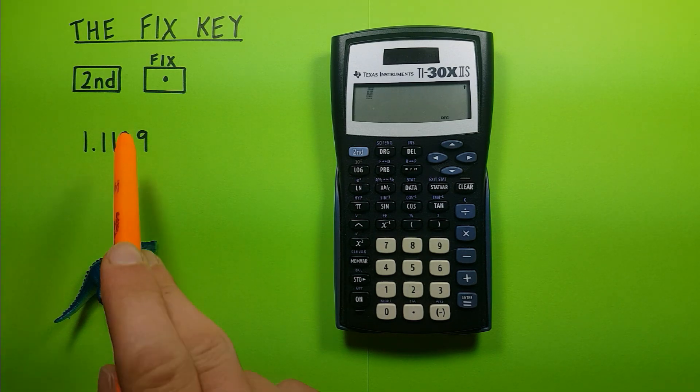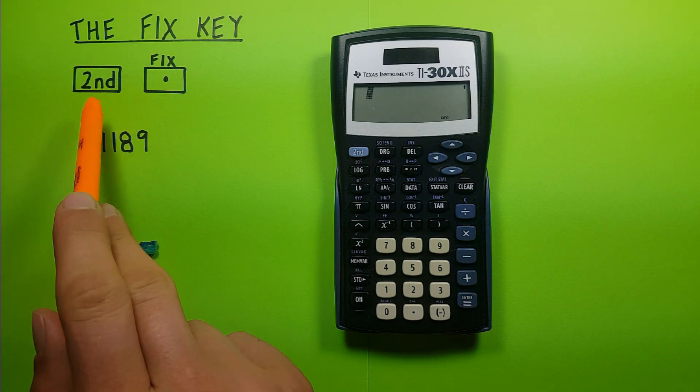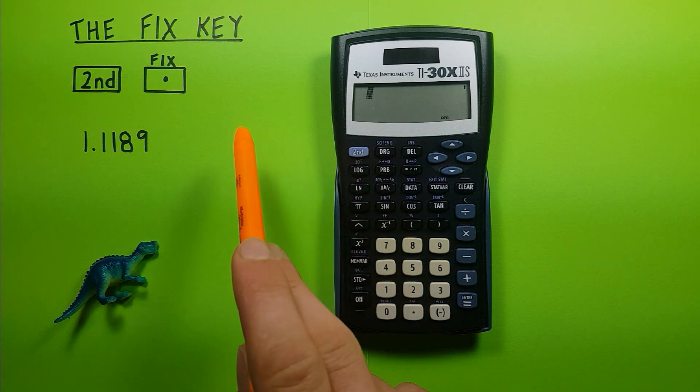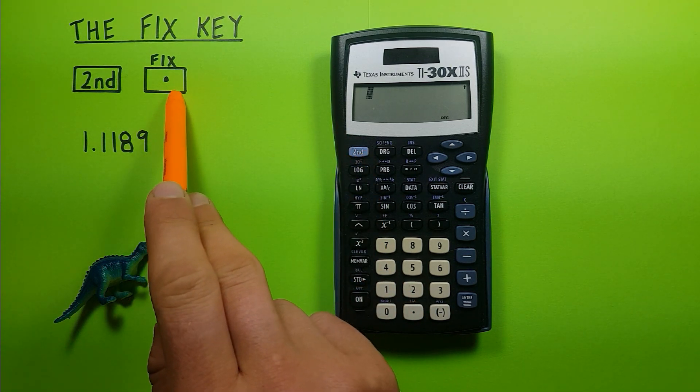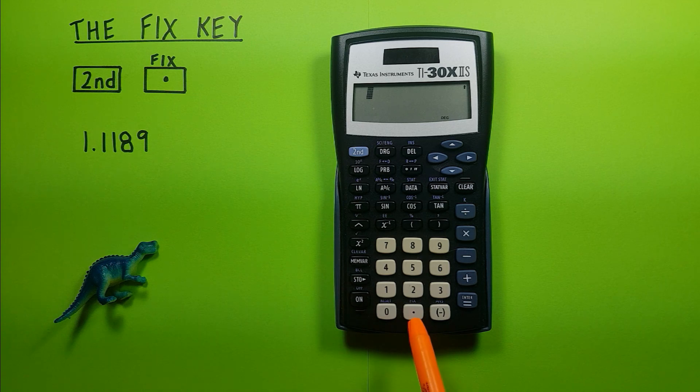To do this we'll be using the second function key, looks like this, located here, as well as the fix key that looks like this. It's the decimal key with the second function of fix located down here.